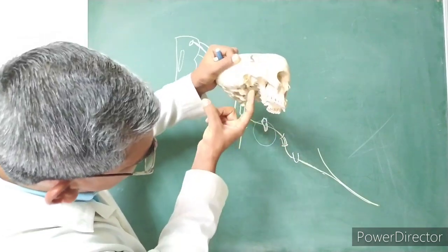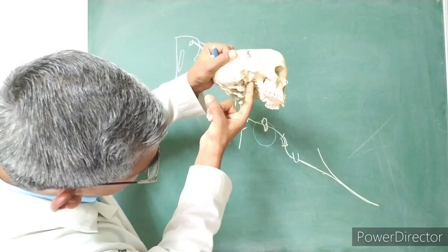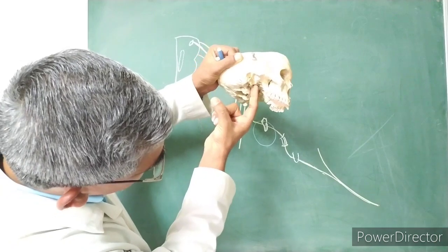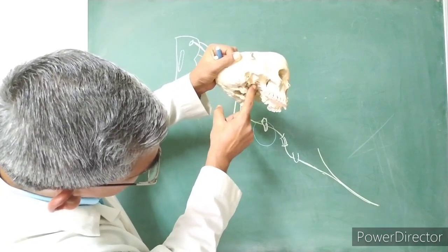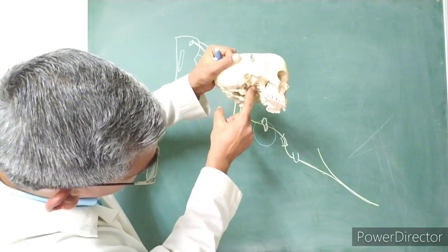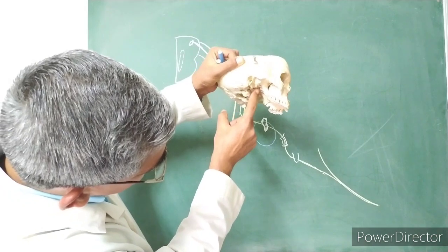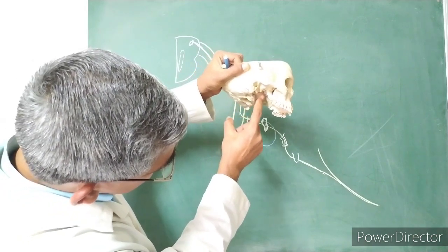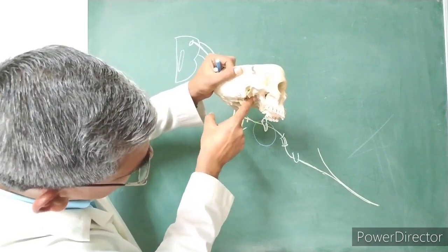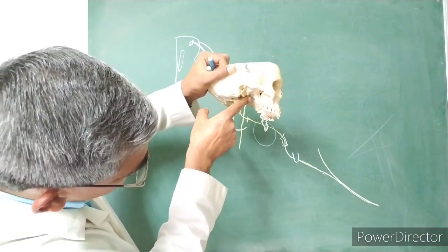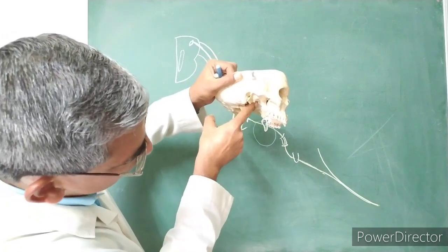Medially, the chorda tympani nerve is related to the tensor palatini muscle, which starts from the pharyngotympanic tube and descends downward — the tensor palatini muscle is medial to the chorda tympani nerve.